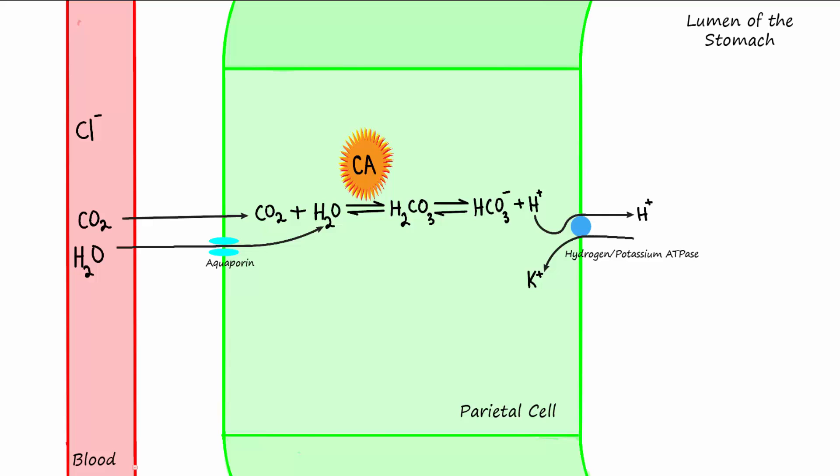The bicarbonate ions leave the cell by way of a bicarbonate chloride exchanger on the basolateral membrane of the parietal cell. These exchangers put a lot of bicarbonate into the blood that is leaving the stomach. We know bicarbonate is basic, so this causes what is known as the alkaline tide, a tide of alkalinity in the blood leaving the stomach.